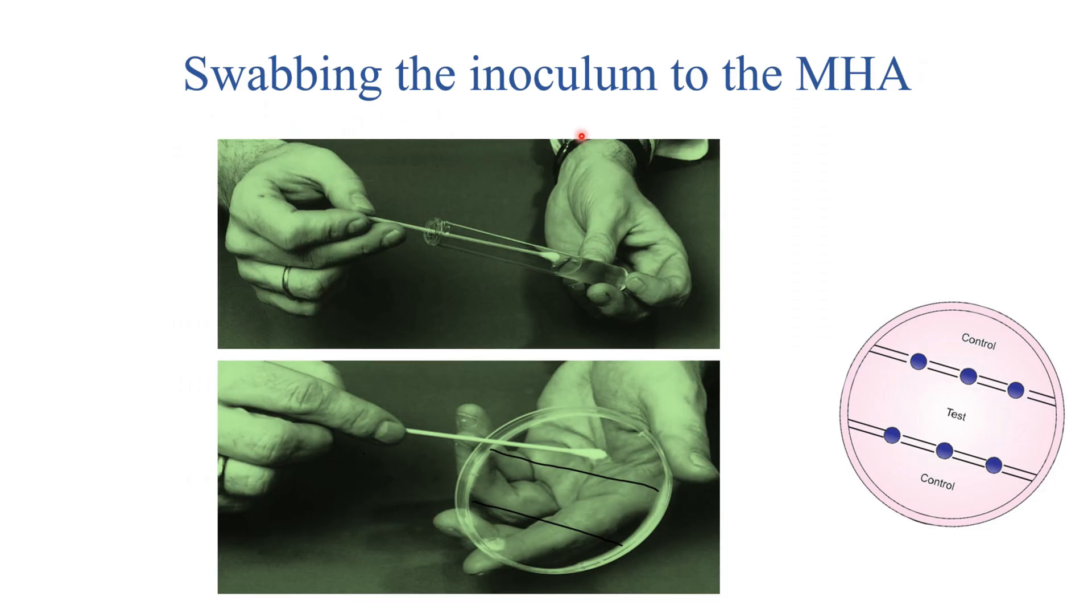Swabbing the inoculum to Muller-Hinton agar. After checking the 0.5 McFarland standard, we will make three parts in the Muller-Hinton agar in the case of Stokes culture method. First and the third part is control. Here you can see this picture and the center part is called the test and we will lawn culture the control strain into the first and third part.